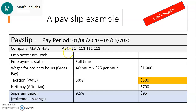We must be able to see the name of the employee — that is the worker. Here we have Sam, and Sam's employment status is full-time. He could be part-time or he could be casual.